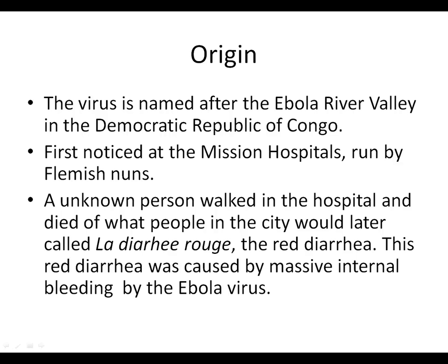The origin of the virus comes from the Ebola River Valley in the Democratic Republic of Congo. It was first noticed in missionary hospitals run by Flemish nuns. A person walked into the hospital and died of what people would later call the red diarrhea, which was caused by massive internal bleeding. His large and small intestines were deteriorating.